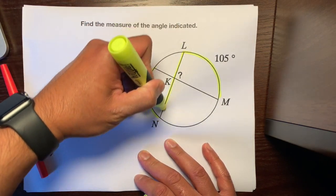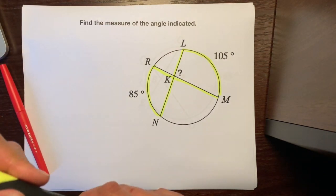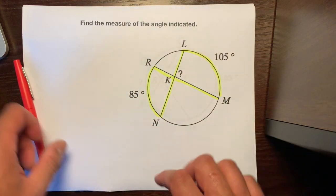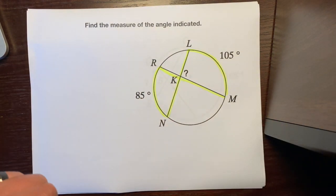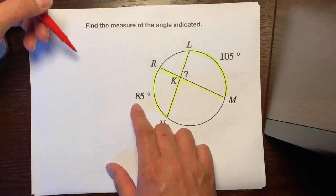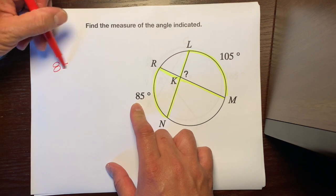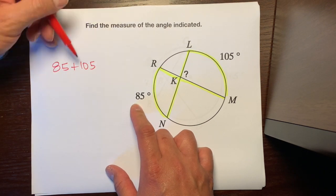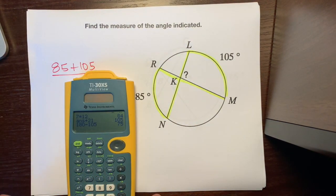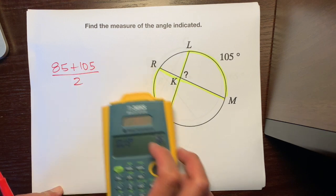I'm just going to highlight these two chords. If you notice, these two arcs are being eaten by these two vertical angles. So in order to figure out what this angle is, all we have to do is find the average of these two arcs. We're going to take this 85 and add it to the 105 and divide it by 2 to find the average. Let's use our calculator: 85 plus 105 divided by 2 is 95 degrees.